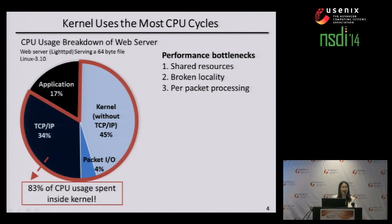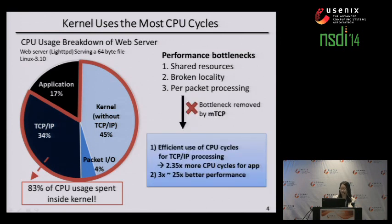Performance bottlenecks mainly come from three factors: shared resources, broken locality, and per-core processing. With MTCP, we gradually reduce these bottlenecks. We make TCP/IP processing more efficient, and the CPU usage for the application increases 2.35 times. As a result, we improve TCP performance by a factor of 3 to 25 times depending on the application.